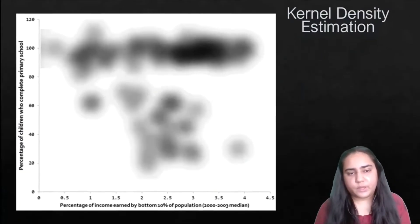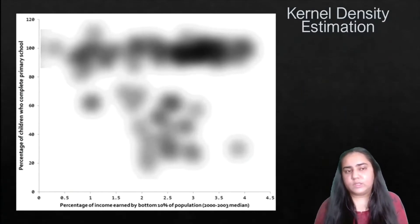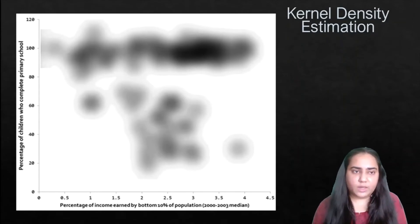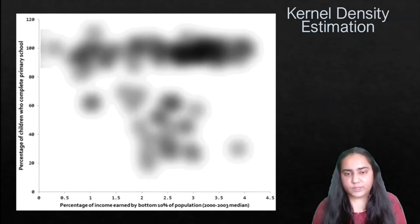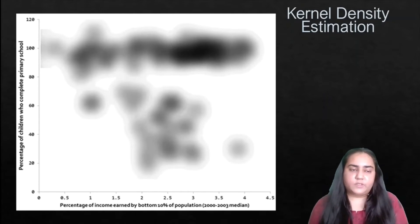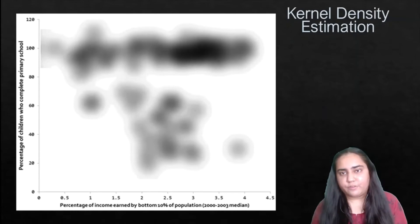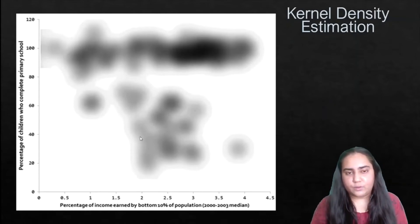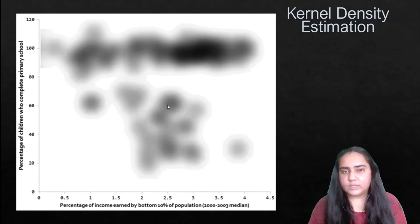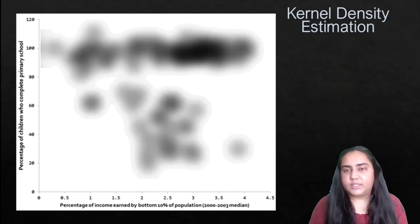Here is an example. In one of my previous videos, I introduced a dataset created by the World Bank about income and children with primary school education — specifically, the percent of income earned by the bottom 10% of the population versus the percentage of children who have completed primary education. This is the scatter plot of that data, and this is how the kernel density algorithm works. You can see how certain data points are merged together to generate a denser and denser kernel, and in the end all you can see are these big blobs of black, which show data points merged together.